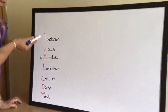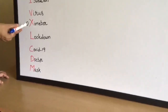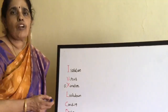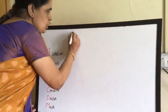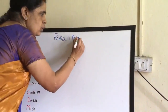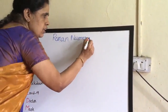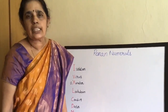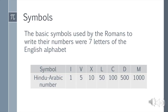What did you observe, children? I-V-X-L, C-D-M. These are the seven basic symbols of Roman numerals. Our today's topic is Roman numerals, from Chapter 1, Large Numbers. The basic symbols used by the Romans to write their numbers were seven letters of the English alphabet. There is no symbol for zero in the Roman system. Symbols and their values are given in the table below.